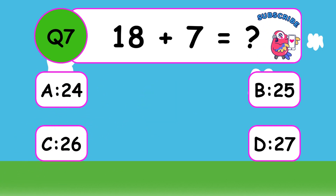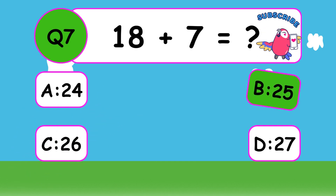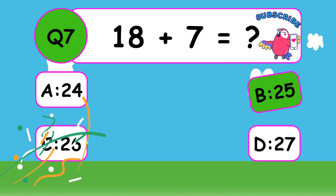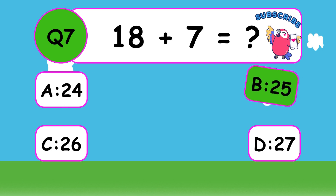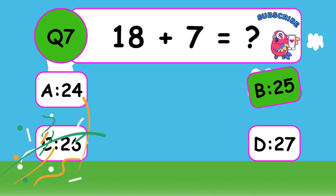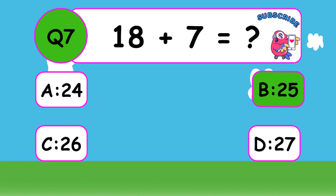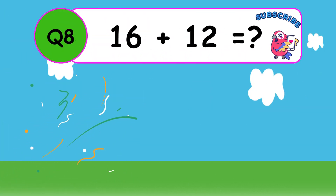What is 18 plus 7? The answer is B, 25. You're amazing, 18 plus 7 equals 25.